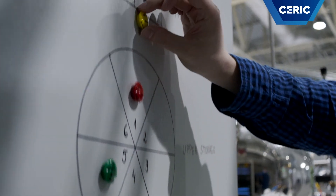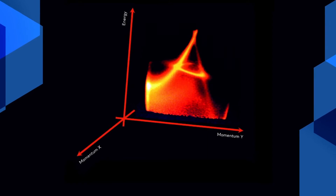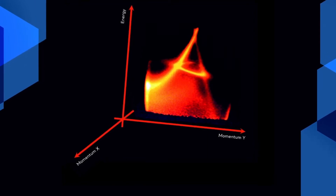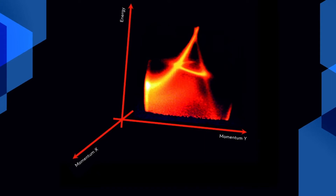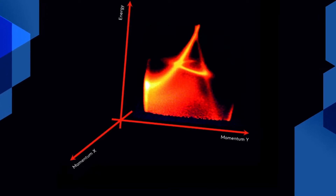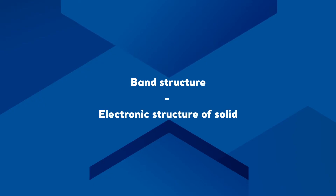To investigate the matter properties in depth, one has to look at how the electrons are moving. This is described with a so-called dispersion relation — a dependence of electron energy versus momentum. The dispersion relations are also called the band structure or the electronic structure of a solid.